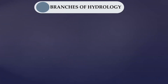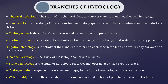The various branches of hydrology include: chemical hydrology, which covers the chemical aspects of water; ecohydrology, related to plants, animals and their hydrological cycle relationship; hydrogeology, related to underground water; hydroinformatics, applying information technology to hydrology; hydrometrology, dealing with water body surfaces and lower atmosphere interactions; isotope hydrology, related to isotopic signatures of water; surface hydrology, covering rivers and lakes; drainage basin hydrology, looking at catchment area, reservoirs and flood protection; and water quality hydrology, dealing with pollutants and solutes in water.